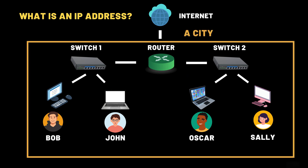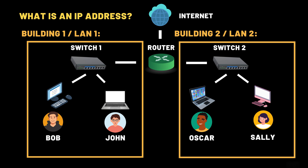Think of the internet as a vast city. Each building in this city represents a local area network, or LAN. In the lab network shown here, for example, we have two buildings. One has the 192.168.1 postal code, the other has the 192.168.3 postal code. Inside each building, or LAN, there are apartments. These represent your devices — laptops, phones, smart TVs, even smart fridges.